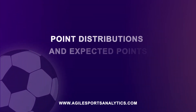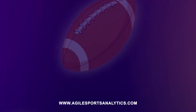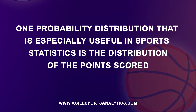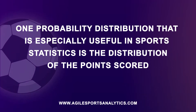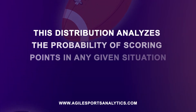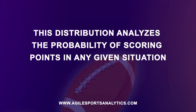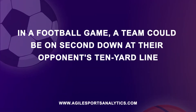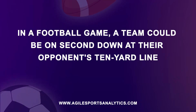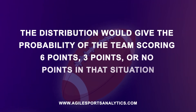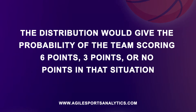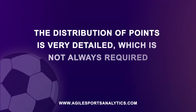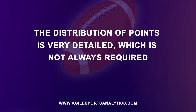One probability distribution that is especially useful in sports statistics is the distribution of the points scored. The distribution analyzes the probability of scoring points in any given situation. In a football game, a team could be on second down at their opponent's 10-yard line. The distribution would give the probability of the team scoring 6 points, 3 points, or no points in that situation. The distribution of points is very detailed, which is not always required.